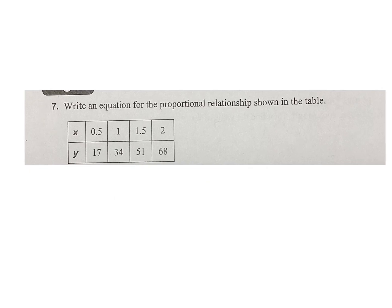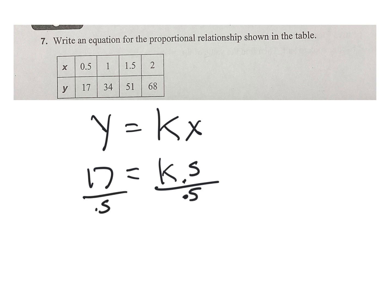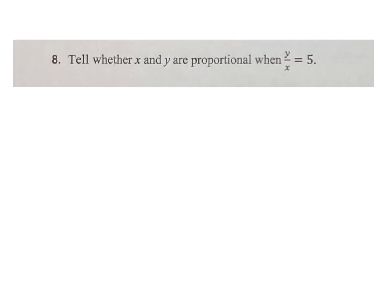Write an equation for the proportional relationship shown in the table. You got to remember that y equals k times x. k is my constant proportion. So let's pick y = 17 equals k times 0.5. So I got to divide that by 0.5. 17 divided by 0.5 is 35 equals k. So my equation is y equals 34x. And that will work every time for every number in that x and y table.